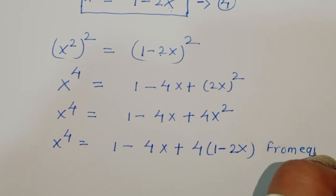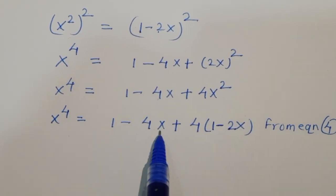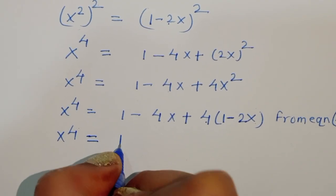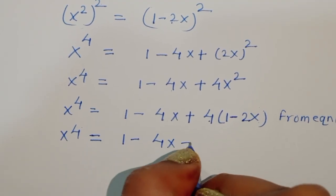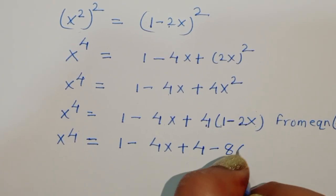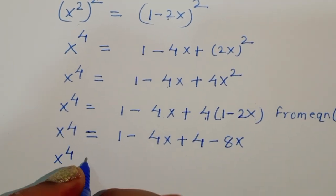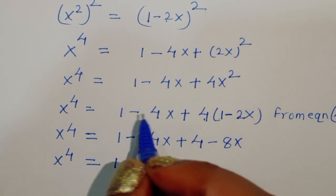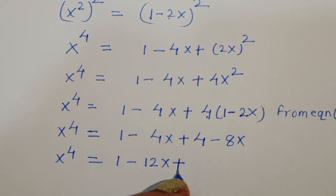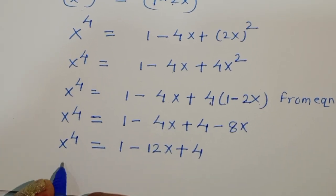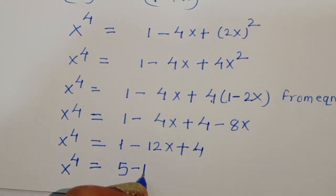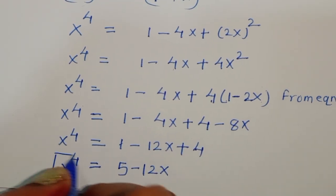So x to the power 4 equals 1 minus 4x plus 4 times (1 minus 2x), which gives 1 minus 4x plus 4 minus 8x. Therefore x to the power 4 equals 5 minus 12x. This is equation number 5.